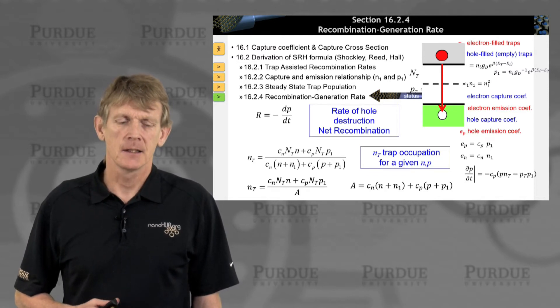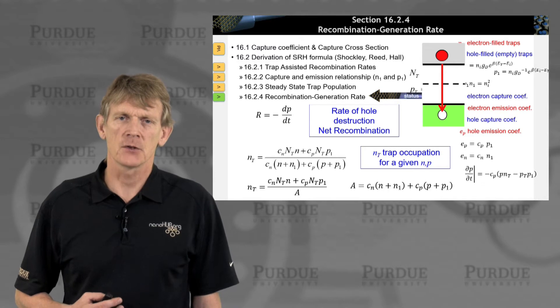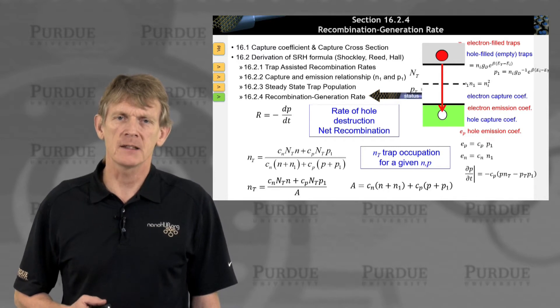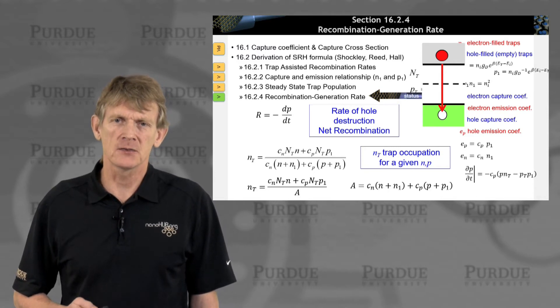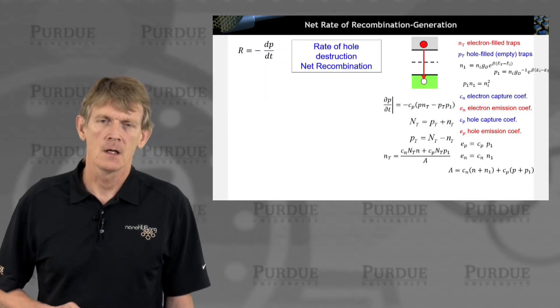We're going to use that now to calculate the rate of hole destruction, which is the net recombination. So this R equals minus dP/dt will be the starting point for the rest of this derivation here.